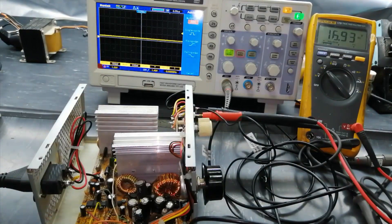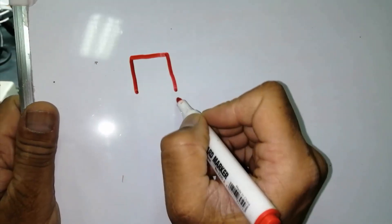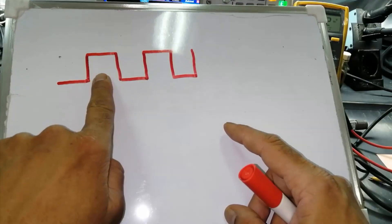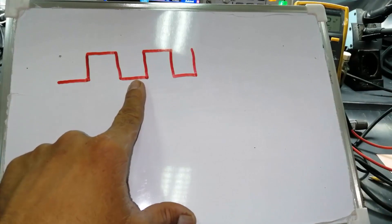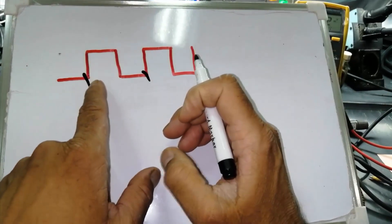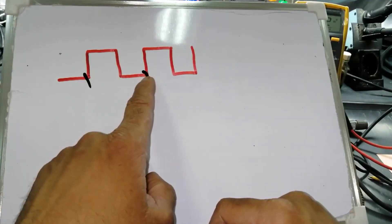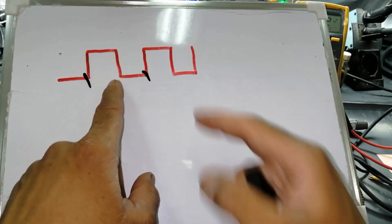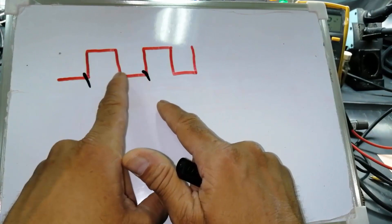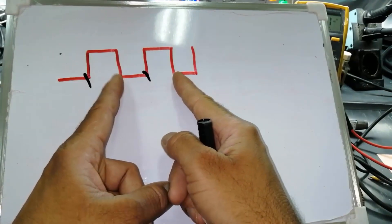Let's see what duty cycle is. Here is one pulse — this is one cycle. On time, off time, from one end to the other end. From one rising edge to the next rising edge — this is a rising edge, this is a falling edge. From one rising edge to the second rising edge, or from one falling to the second falling, is our one cycle.